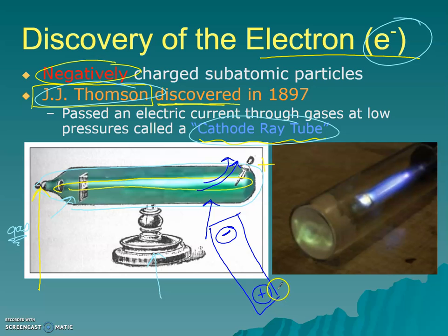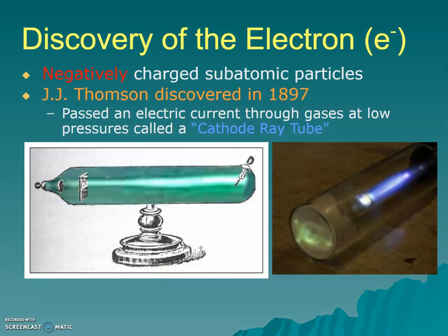When he flipped the magnet and put the positive end up to it, the beam went towards it. So opposites were attracting here.